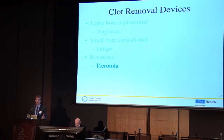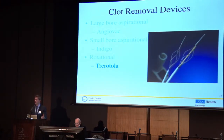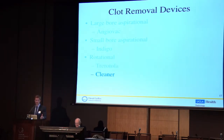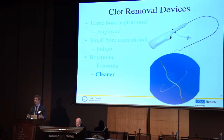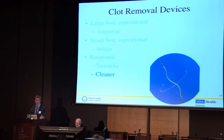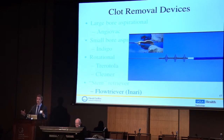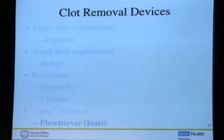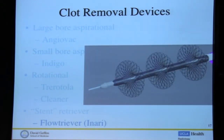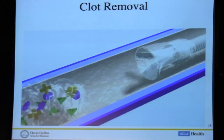Rotational devices can be very helpful if you're trying to clear something adherent to the wall of a Fontan graft or anything prosthetic. I showed a Triactol there — rotational devices that churn up whatever is there; we use them a lot with infected material, particularly within the cava. And a final one new to the market is called the Flowtriever from Anari Medical. It uses nitinol disks — essentially Amplatzer device equivalents — that you place out into the clotted area, capture the clot between the disks, and retract it back in. We've used that in multiple places.